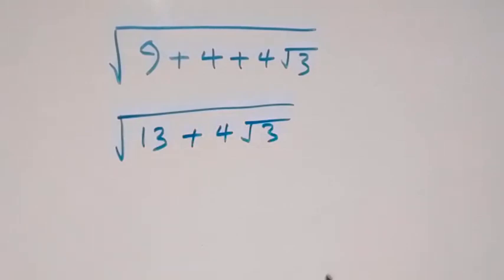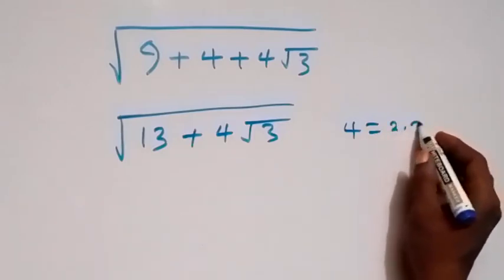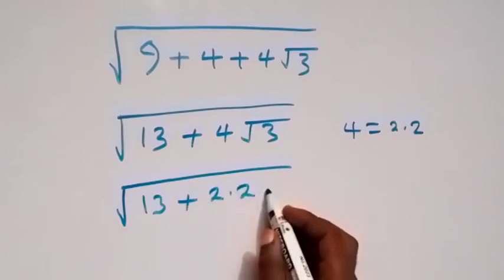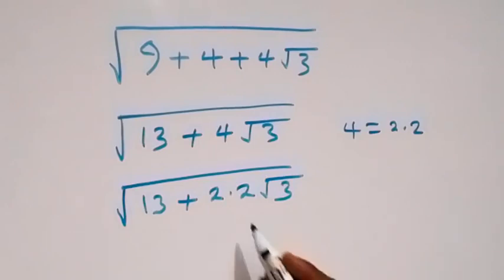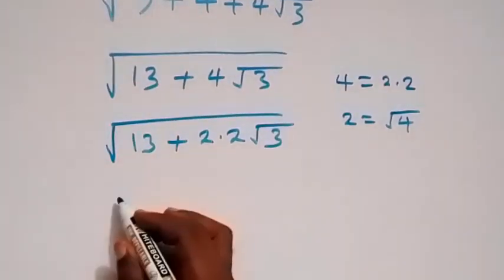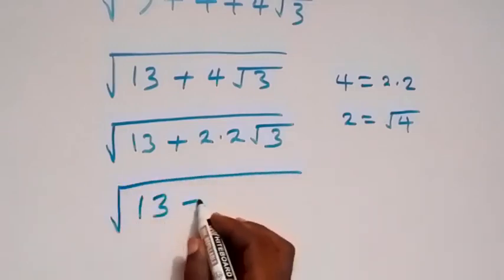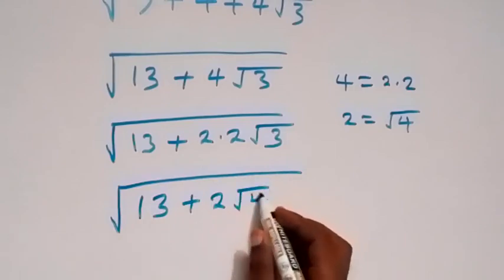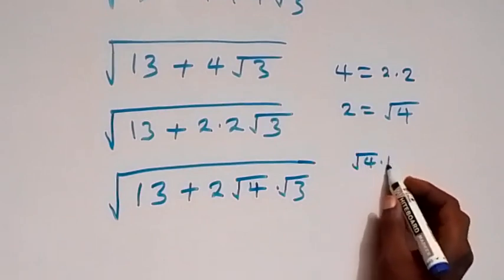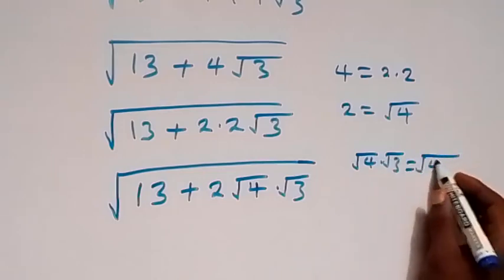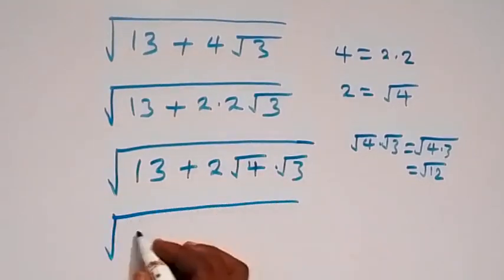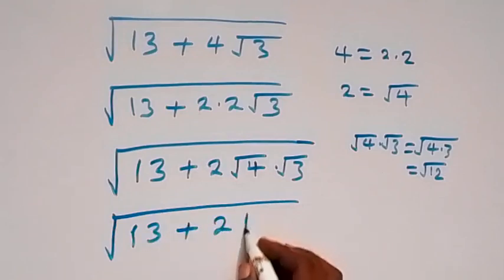Now 4 we can separate as 2 times 2, and this will become square root of 13 plus 2 times 2 times root 3. Also, these two here we can write again as root 4. This will give us square root of 13 plus 2 times root 4 times root 3, and root 4 times root 3 we can write as root 4 times 3. This gives us root 12, so from here this will become square root of 13 plus 2 root 12.